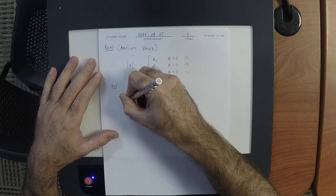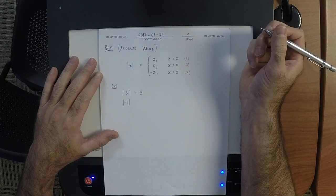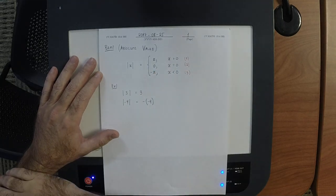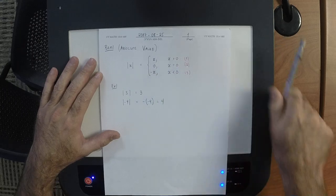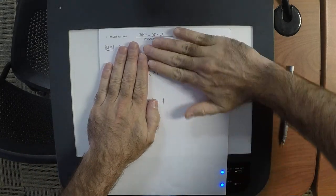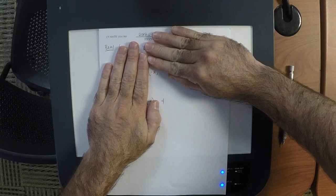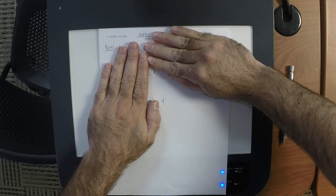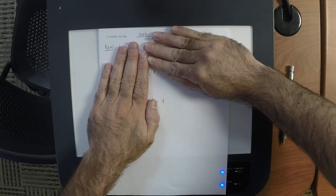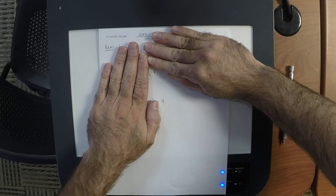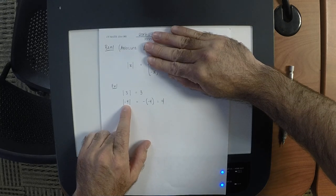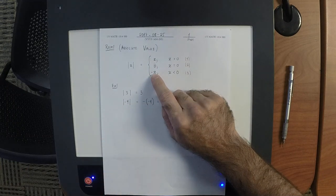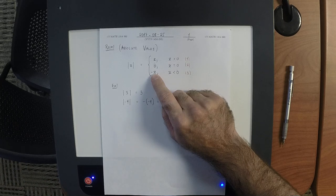What's the absolute value of negative 4? It's 4. The definition says it's negative negative 4, which of course is 4. Let's look at just negative x for a moment — is it possible that negative x could be positive? Yes. Give me an example: if x is negative 4, then negative x is negative negative 4. So just because it says negative x doesn't mean something negative is coming out.